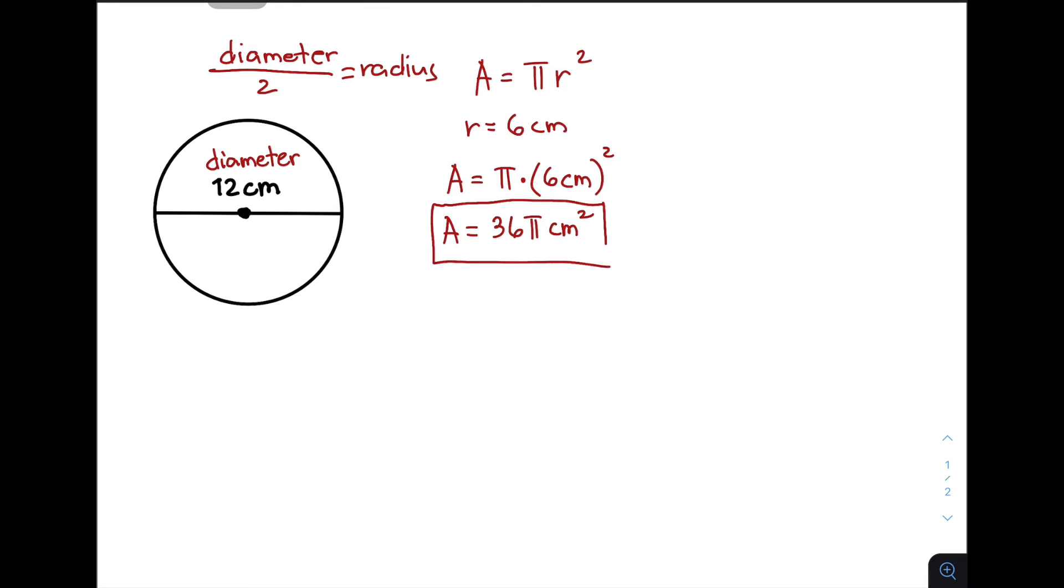This is the first possible answer. And if you will be using the value of pi, which is approximately 3.14, you can still get the approximate value. We have area equals 36 pi centimeters squared. We will replace this using 3.14, giving us area approximately 36 times 3.14 centimeters squared.